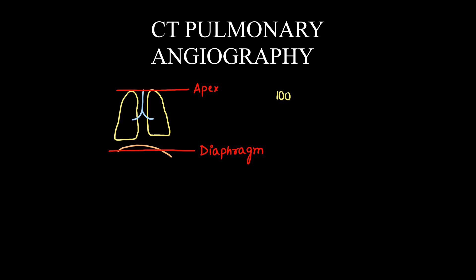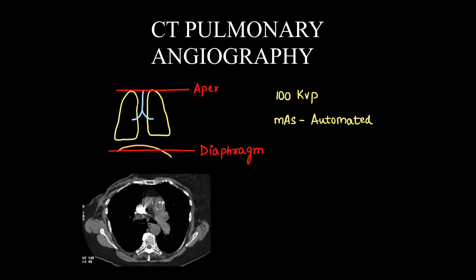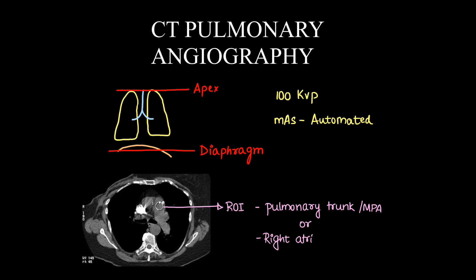The scan is taken from the apex to the diaphragm with 100 kVp and mAs automated by the machine. The ROI is placed in the pulmonary trunk or main pulmonary artery, or it can be placed in the right atrium. The scan is triggered after the ROI reaches 100 HU.